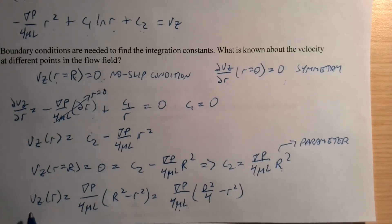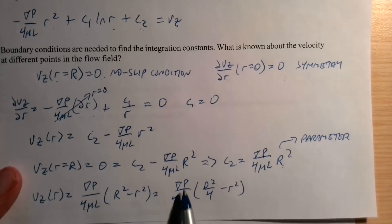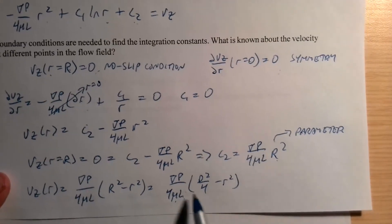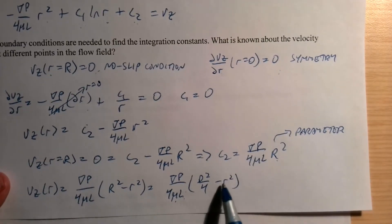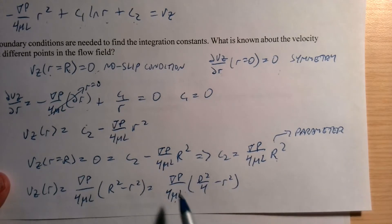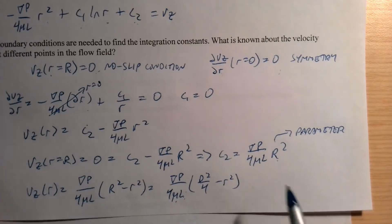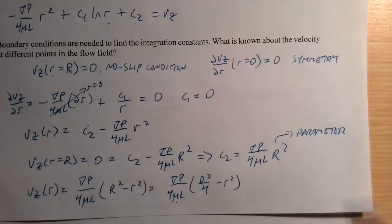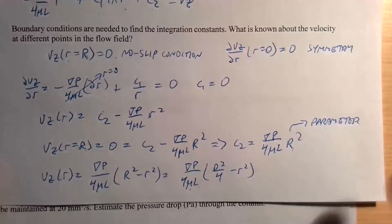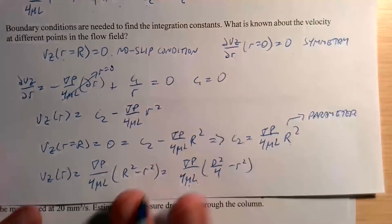We now have an equation for the velocity at different points given the pressure gradient ΔP/L, the viscosity of the fluid, and the diameter of the pipe. When R equals D/2, velocity goes to zero, and at R equals zero it has a maximum value, so the velocity profile is parabolic for laminar flow inside a pipe.